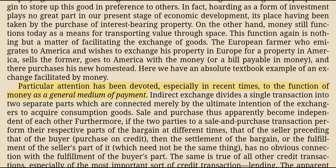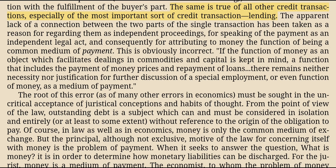Particular attention has been devoted, especially in recent times, to the function of money as a general medium of payment. Indirect exchange divides a single transaction into two separate parts which are connected merely by the ultimate intention of the exchangers to acquire consumption goods. Sale and purchase thus apparently become independent of each other; furthermore, if the two parties to a sale and purchase transaction perform their respective parts at different times—that of the seller preceding that of the buyer—then the settlement of the bargain, or the fulfillment of the seller's part of it, which need not be the same thing, has no obvious connection with the fulfillment of the buyer's part. The same is true of all other credit transactions, especially of the most important sort—lending.